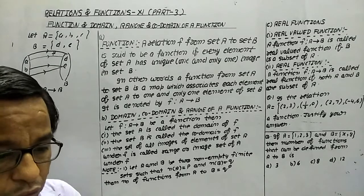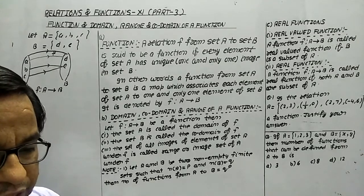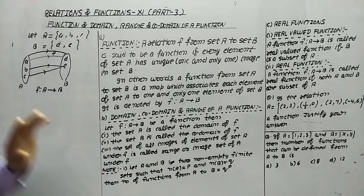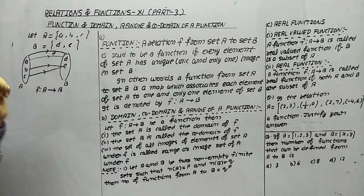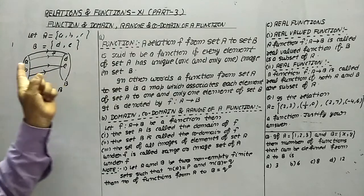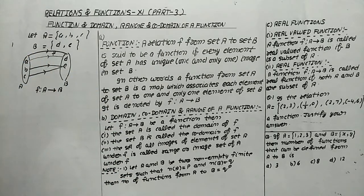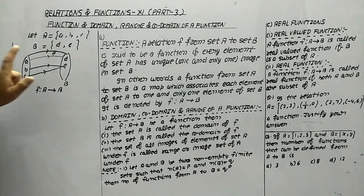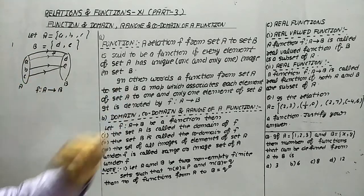Always remember this to check whether it is a function or not. First, we have to check that all elements of the first set are used for the mapping — this is also known as the mapping condition. Then we have to check the second condition: every element should have a unique image.